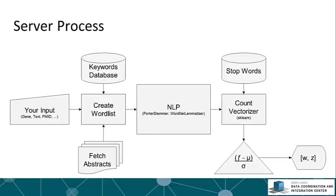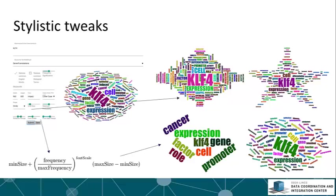Ultimately, the server-side part of this app takes your input and creates a big word list by pulling data from the database and the abstracts. It gets lemmatized, which basically associates different forms of words — for instance, 'scientific,' 'scientist,' 'scientists' all mean the same thing and get collapsed to one concept: 'science.' This way you don't get skewed word frequency counts. After lemmatization, the words get counted up, we find the Z-score, and send that to the client. The client then allows you to filter by Z-score, and ultimately provides lots of dynamic options so you can make your word cloud however you want it to look.